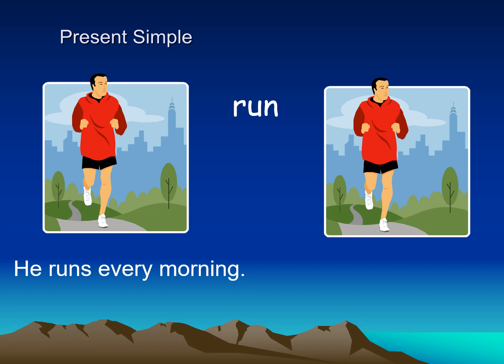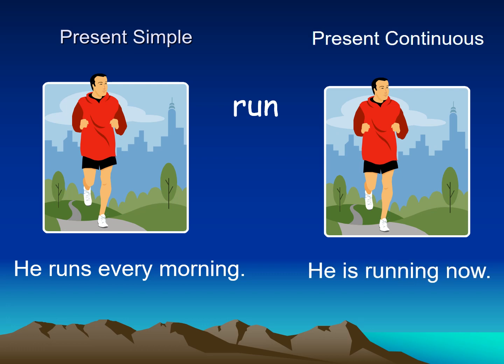If I'm speaking about what this man does every day, I use the present simple. So I'll say 'he runs every morning.' But if I'm going to speak about what he is doing right now, I'll use the present continuous. I'll say 'he is running now.' In the first picture I speak about his habit, what he does every day. But in the second picture, I'm speaking about what he is doing right now.